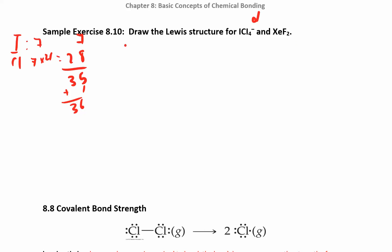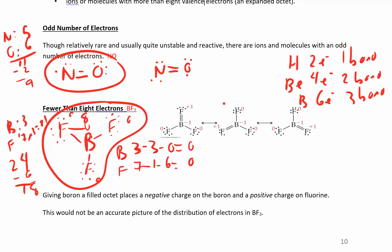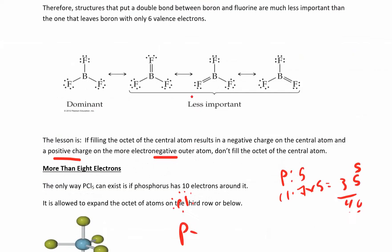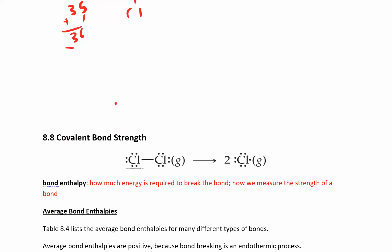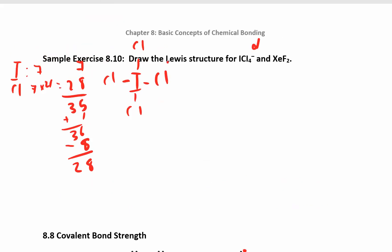So ICl4. I have I in the middle. And then Cl, Cl, Cl, Cl, Cl minus two, four, six, eight. Which gives me 28. This gives me minus eight gives me 28 here. Now I can put on two, four, six, eight, 10, 12, 14, 16, 18, 20, 22, 24. And I have four electrons left.